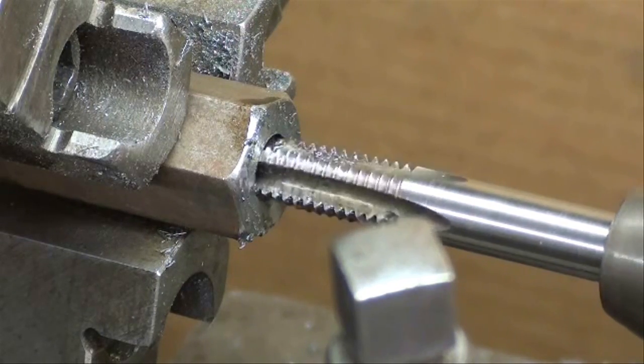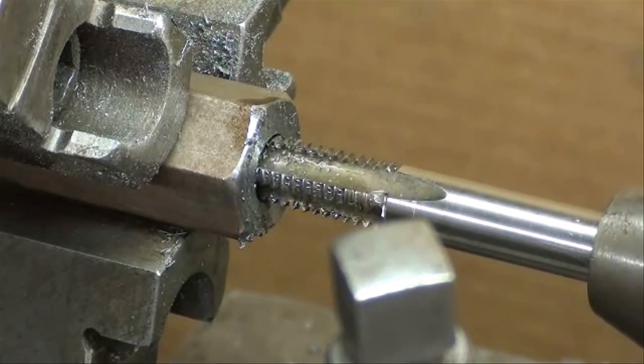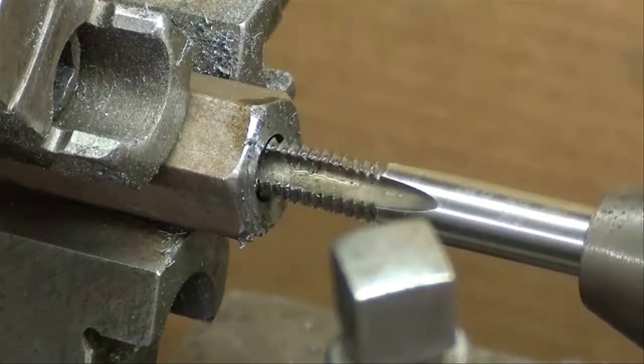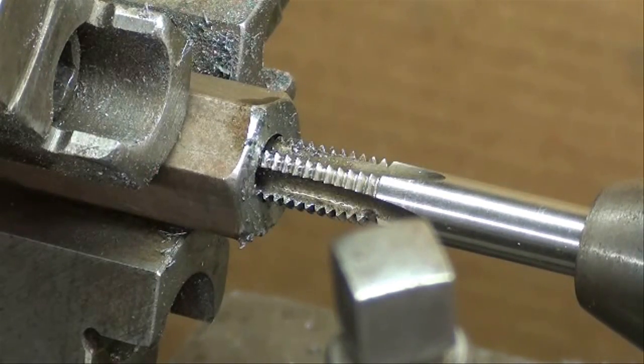And now I'm going to put a little pressure against the tap, I'm turning it in, and then I back it out. Advance the tailstock a little bit, turn it in, back it out. It's a nice sharp tap.